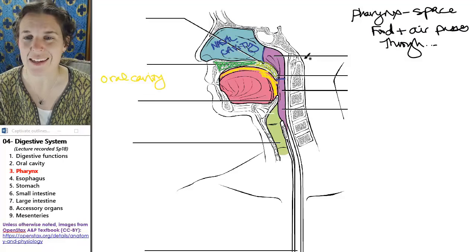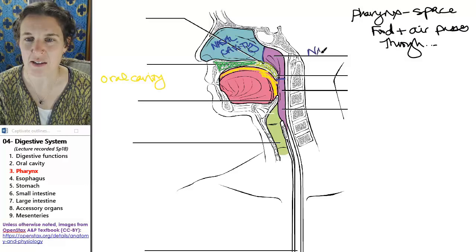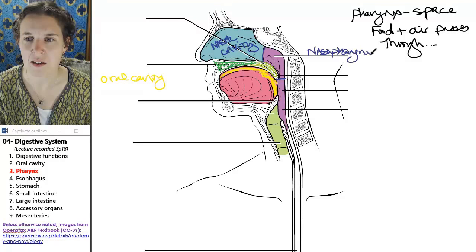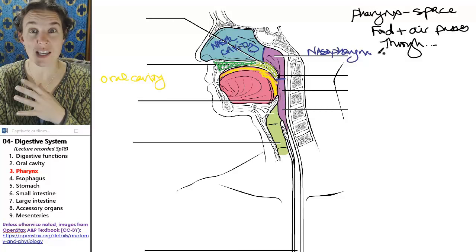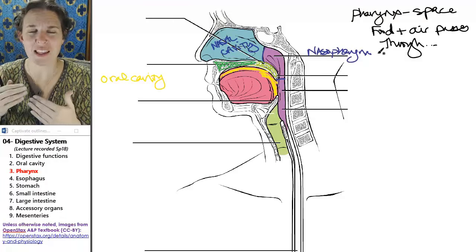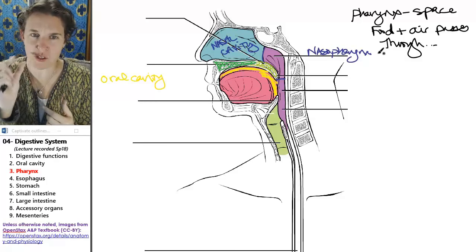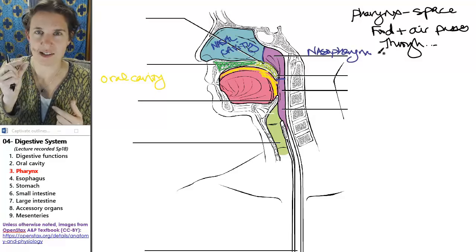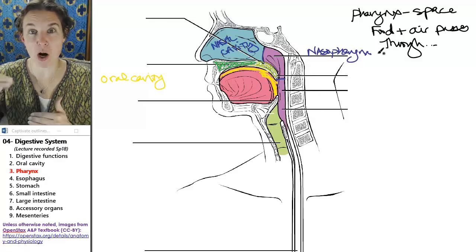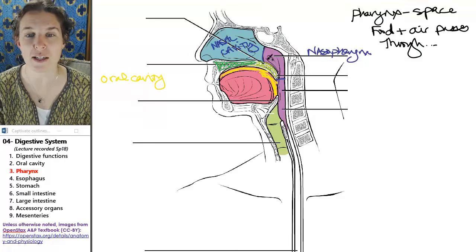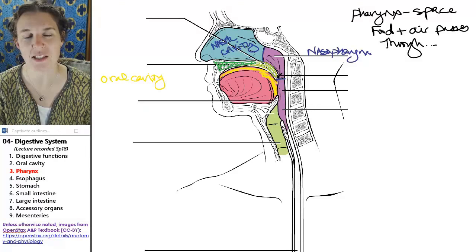If we took the uvula and stood it up straight, we could actually mark off the nasal pharynx. But this whole space back here is the nasal pharynx.